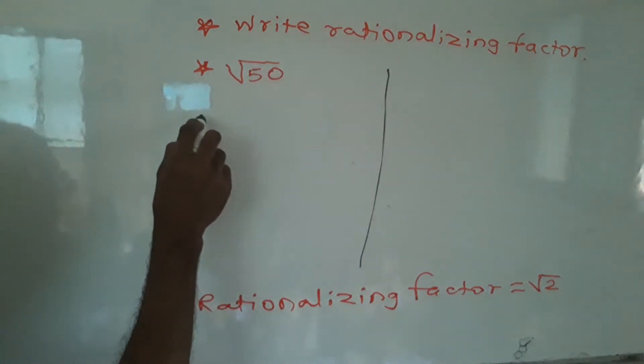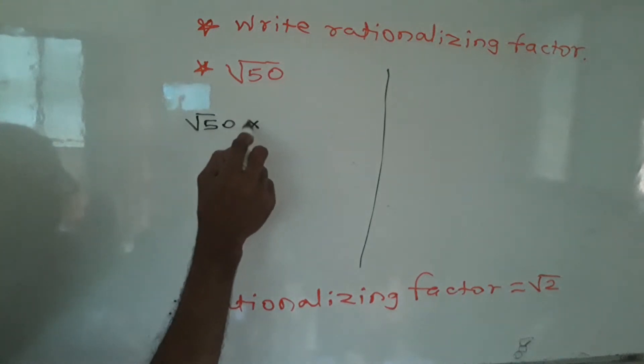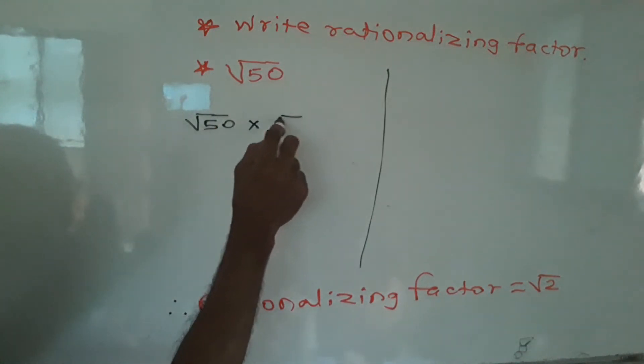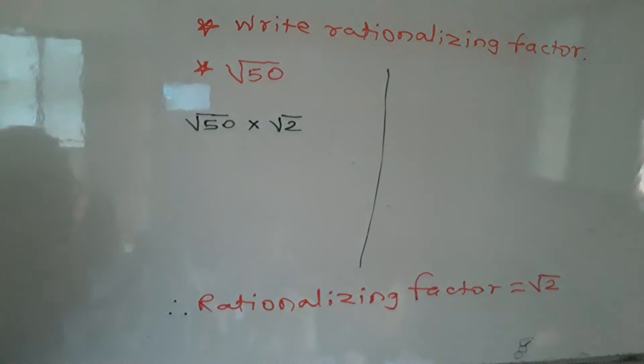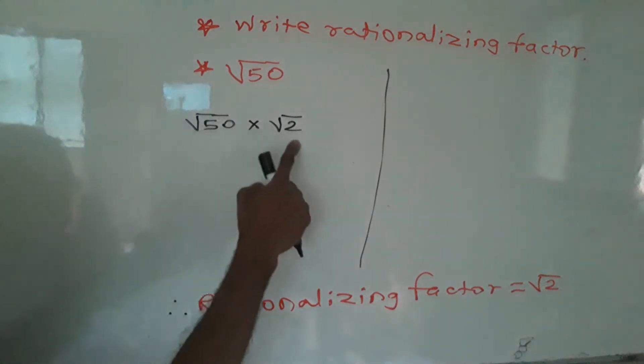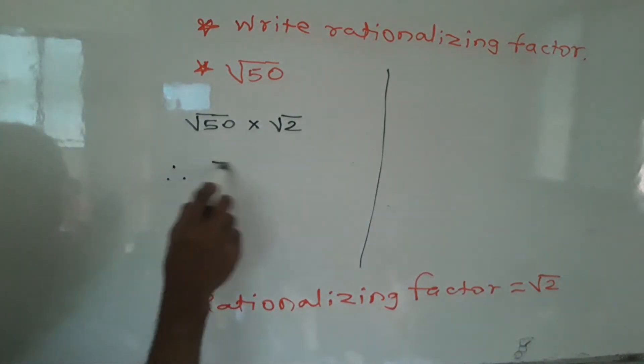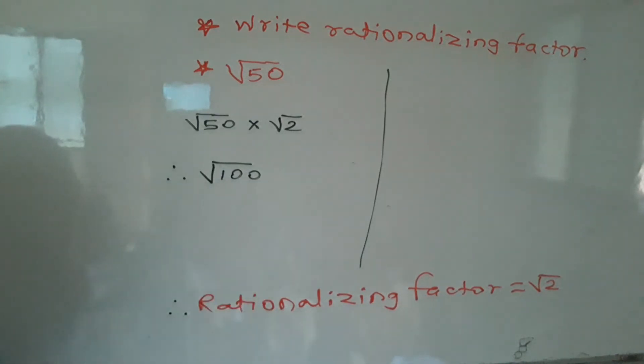When we reduce 50 into perfect square, then we write this way: square root of 50 times square root of 2. When we multiply these two, then the product of these two is square root of 100.